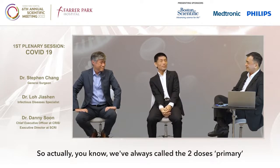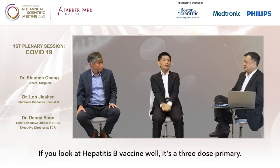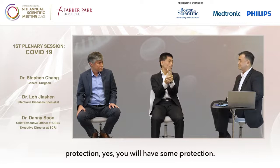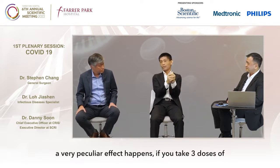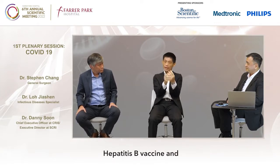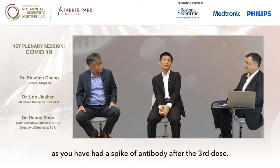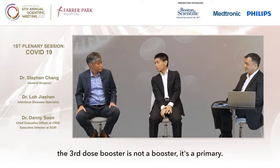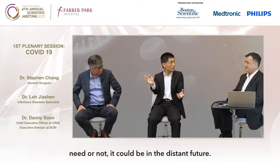We've always called it a two-dose primary and the third-dose booster, because we just learned about mRNA vaccines. If you look at earlier vaccines like HPV, it's a three-dose primary. Hepatitis B vaccine is also a three-dose primary. If you take two doses of hepatitis B vaccine, you will have some protection, but after three doses, a very peculiar effect happens: even if your antibody level wanes 10 years after the third dose, you are largely considered protected as long as you had a spike of antibody after that third dose. So there's a body of opinion saying the third-dose booster is not a booster — it's actually primary one, two, three. After the third primary, whether you really need a booster could be in the distant future. We don't know, and that also has to do with how fast the variant is changing.